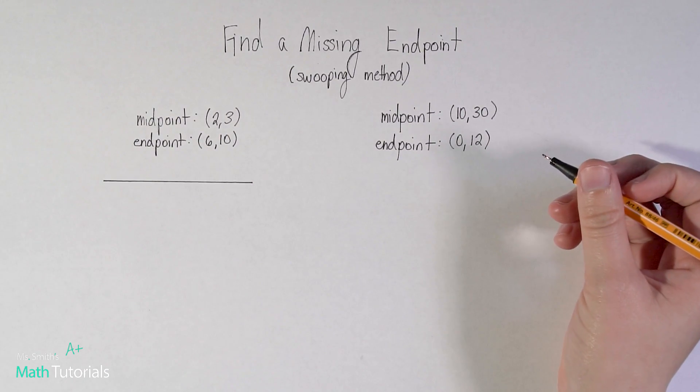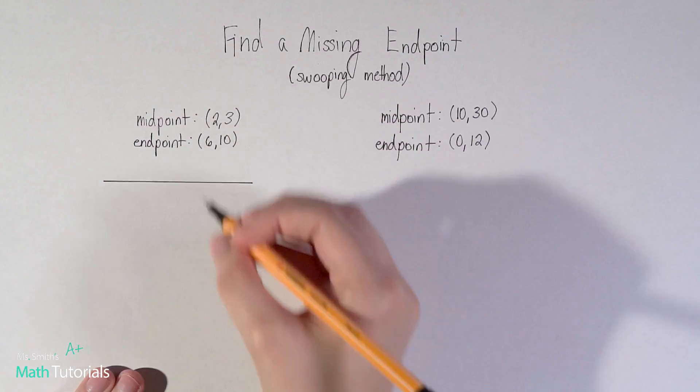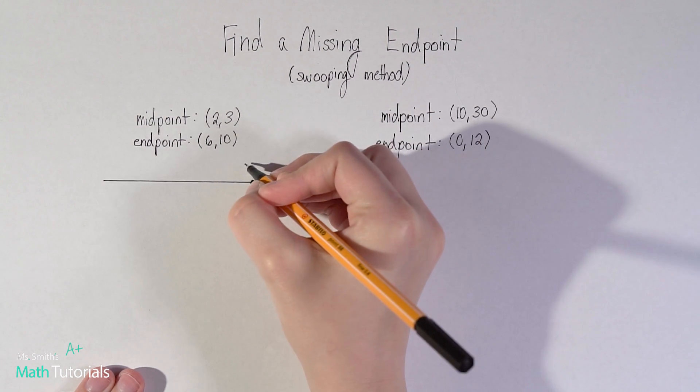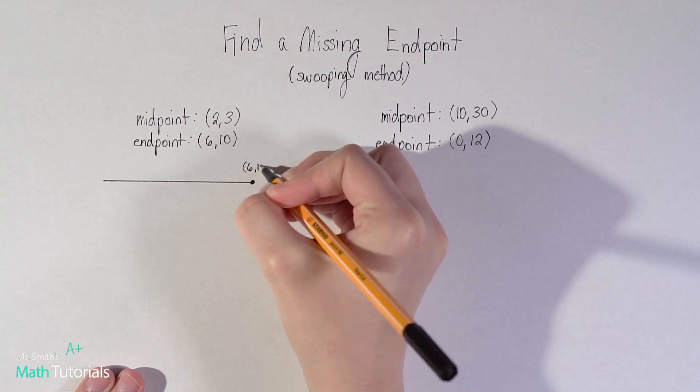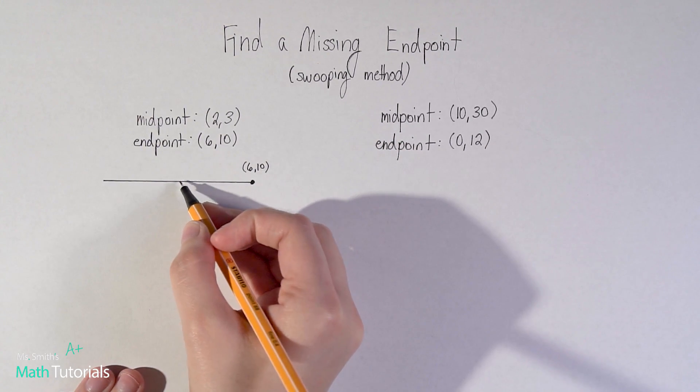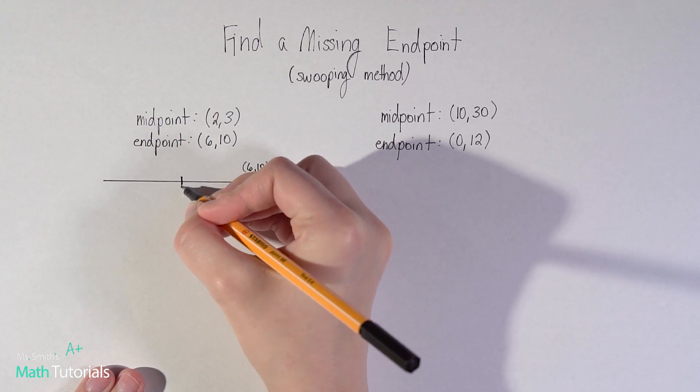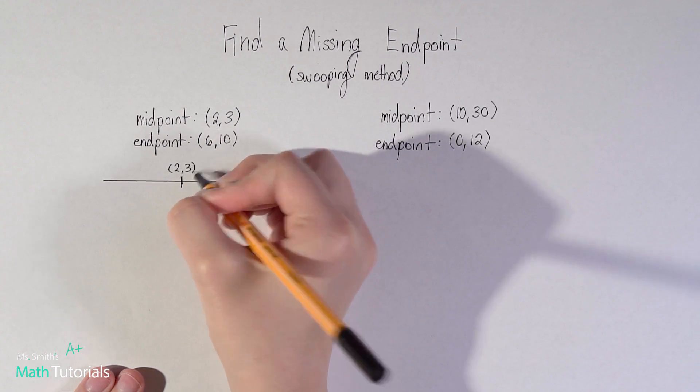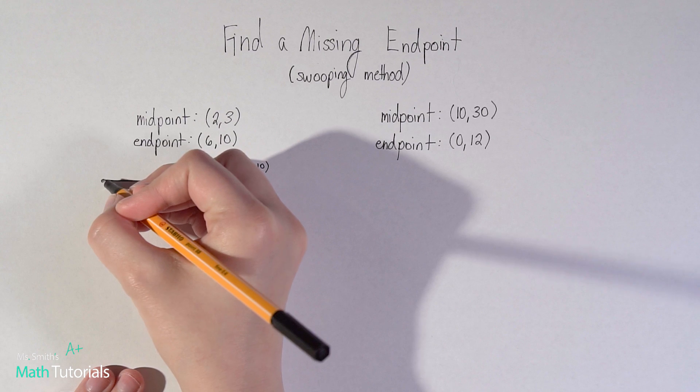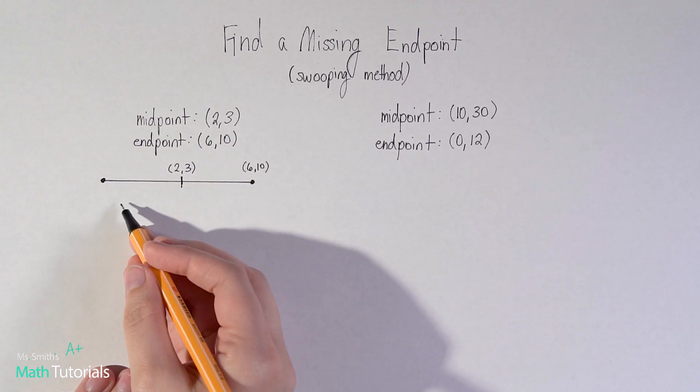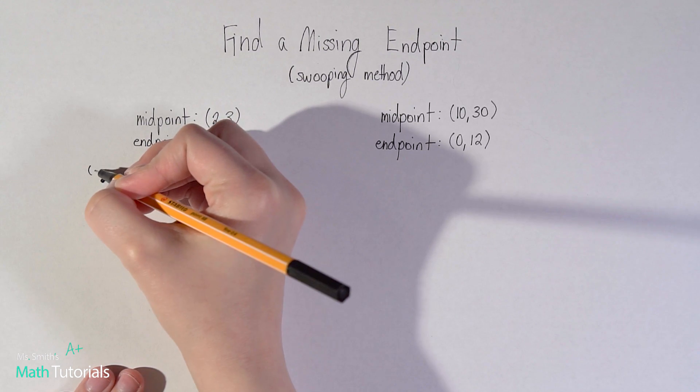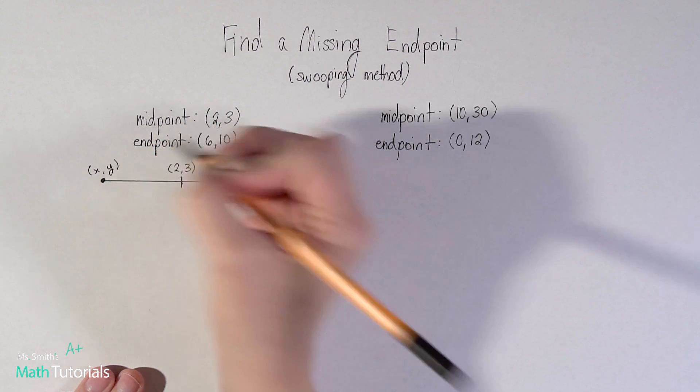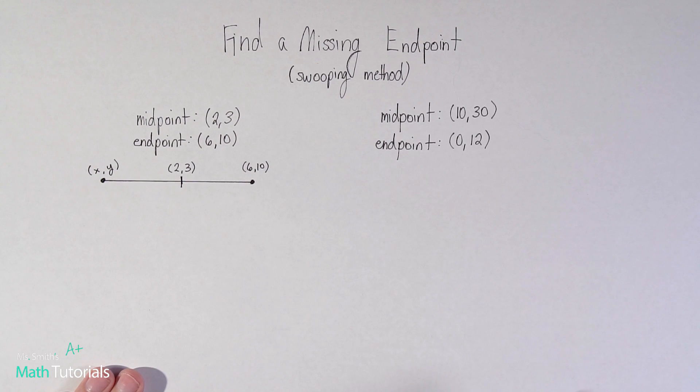If I've got a line, and I know that one endpoint is (6,10), and I know that the midpoint, which we'll say is about there, is (2,3), I want to know what is this other endpoint. So for right now I'm just going to label it (x,y). I want to know what is that endpoint going to be.